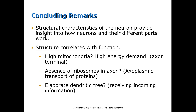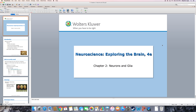Structural characteristics of the neuron help provide insight into how neurons work and how different parts come together to create a cohesive action. Structure correlates with function: the axon terminal has a very high amount of mitochondria due to the high energy demand of releasing neurotransmitters; the axon has an absence of ribosomes because axoplasmic transport of proteins occurs rather than direct protein synthesis; an elaborate dendritic tree creates more surface area to receive more incoming information. That's the end of chapter 2. In the next chapter, we'll start talking about the neuronal membrane at rest.